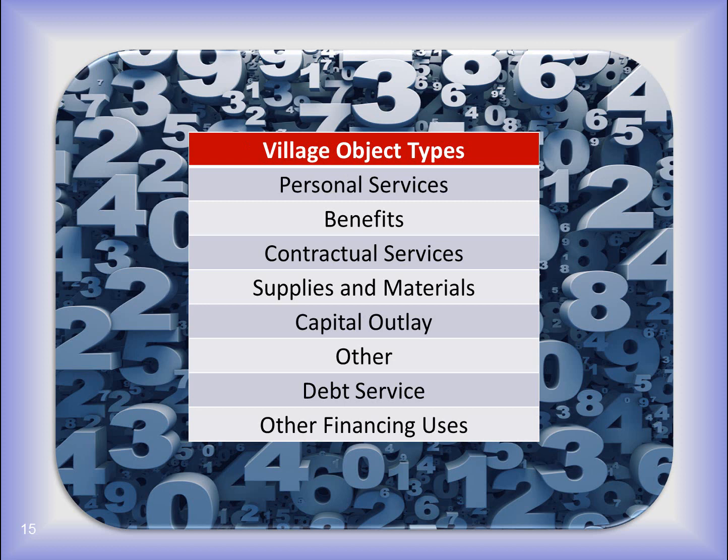Here are the object types that belong to the Village Chart of Accounts, and within each of these types are object codes. The categories are almost the same as the Township Chart of Accounts. Salaries and Purchase Services on the Township Chart are known as Personal Services and Contractual Services on the Village Chart, but the meaning is still clear. Personal Services refers to wages, and Contractual Services refers to object accounts used when you pay for a service such as repairs, utilities, or audit. The other types should only be used when an item doesn't fit into one of the specific object types — this would be rare.